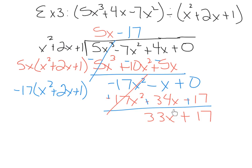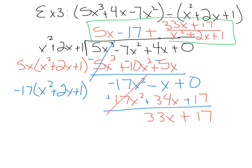You're done when this degree is less than the divisor's degree. The divisor is degree 2; this is degree 1. So 33x plus 17 is going to become the numerator of our fractional term — plus sign, 33x plus 17 over the divisor, x squared plus 2x plus 1. This entire quotient up here is your final answer.